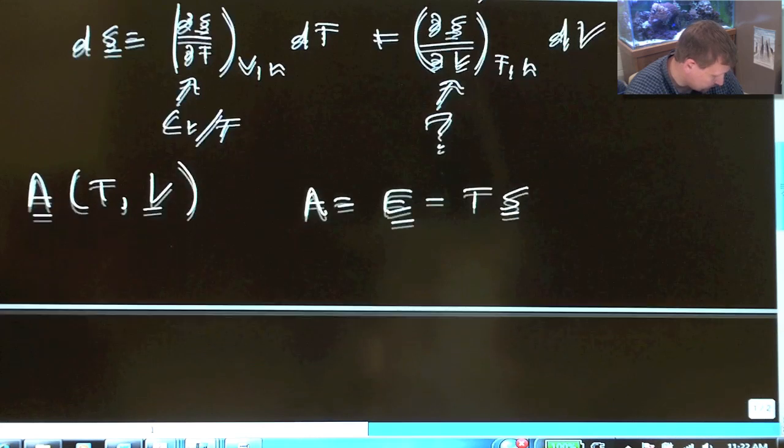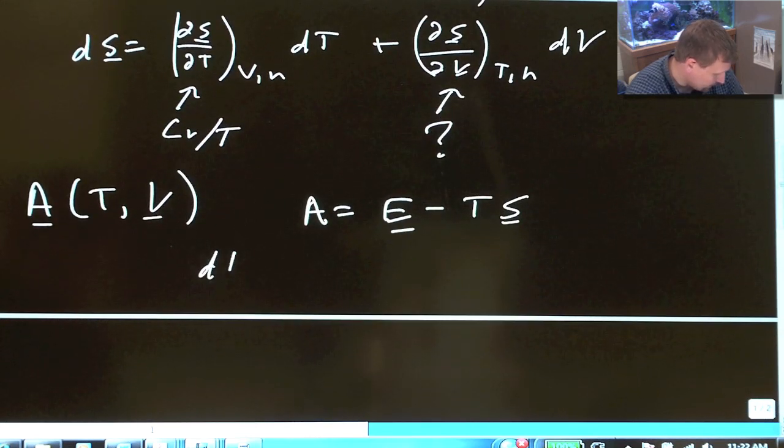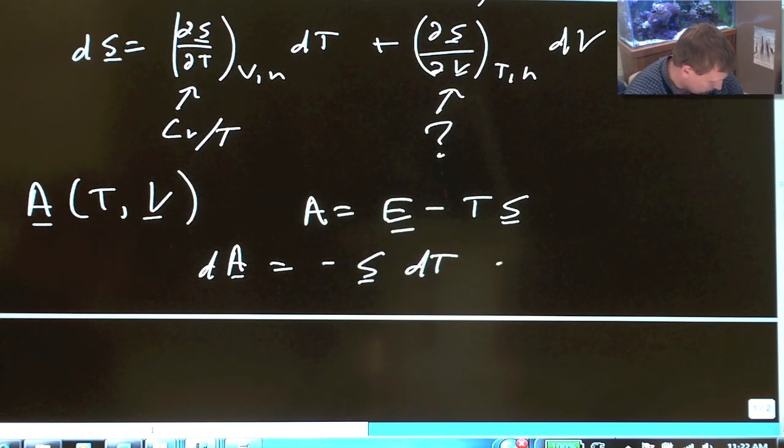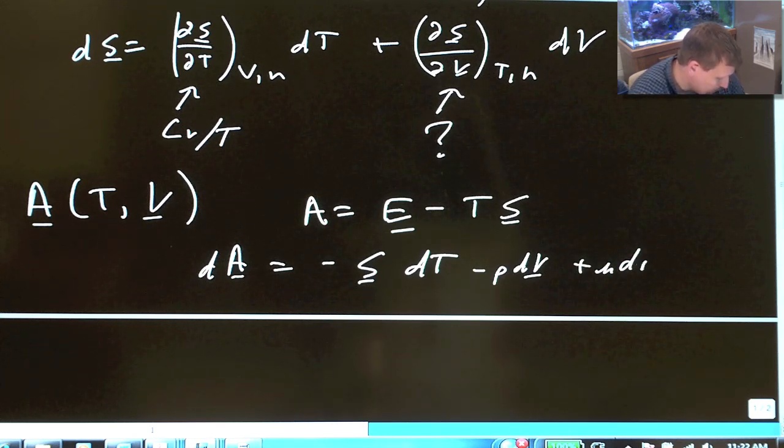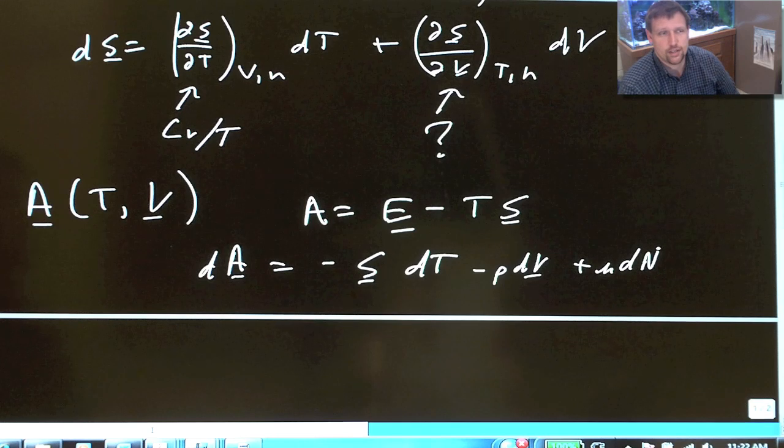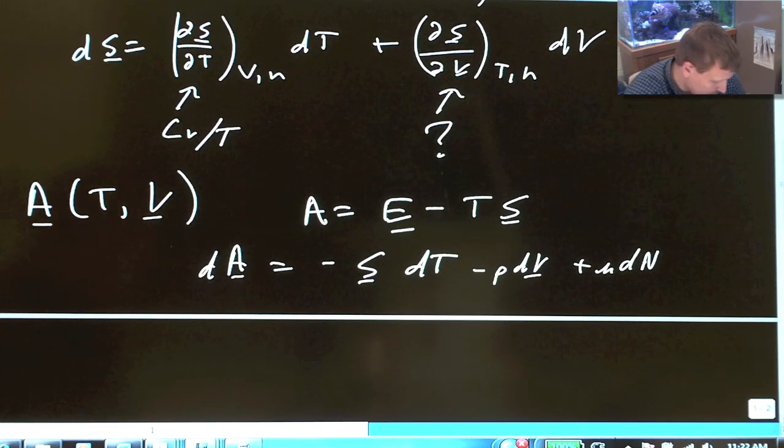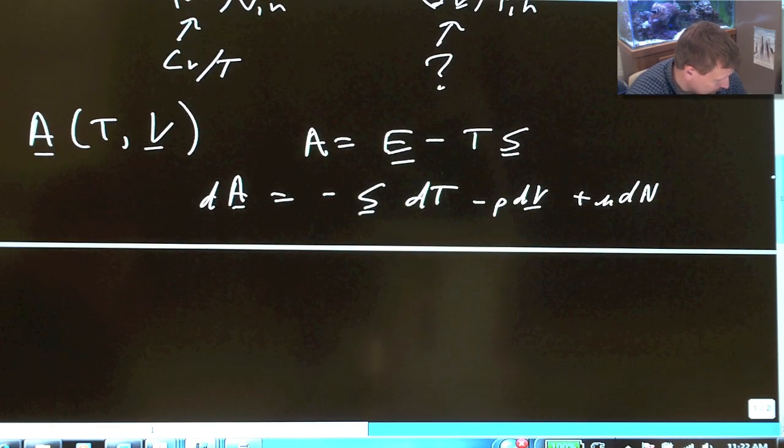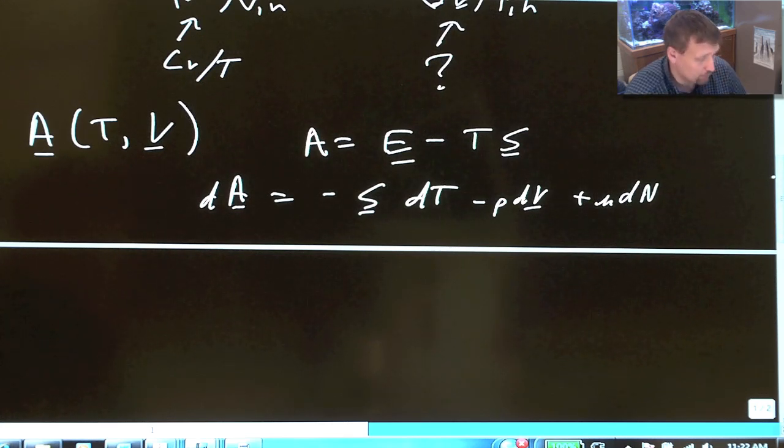What we have with this relationship is then dA equals minus S dT minus P dV plus mu dN. Now, for this problem, we're just going to assume constant number of moles. So, dN will just disappear, and we're not going to deal with a partial molar derivation of this. We're going to deal with a pure component system, one component.